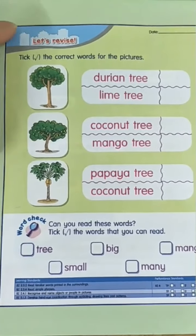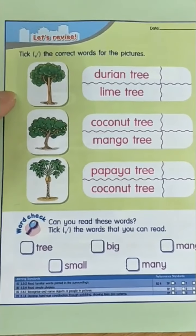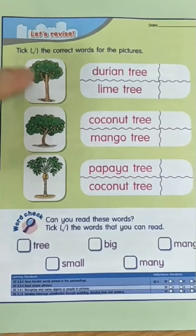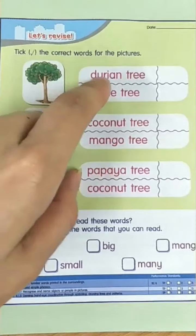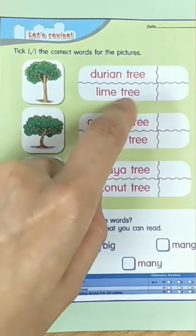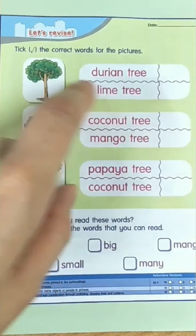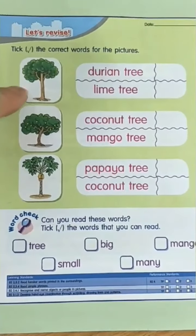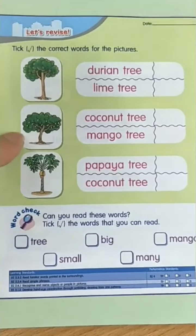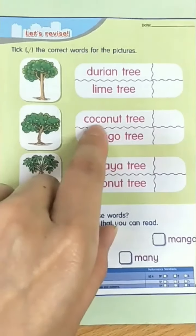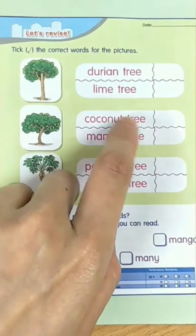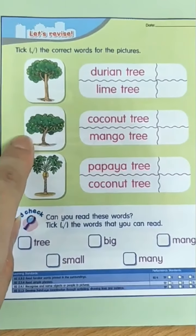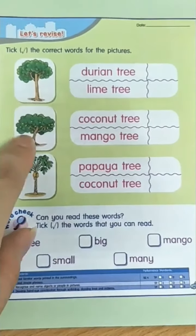Take the correct answer in the picture. Now look into the picture. Is this a durian tree or a lime tree? Yes, it's a durian tree. How about this one? Is this a coconut tree or a mango tree? It's a mango tree.